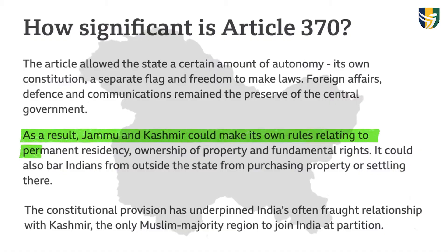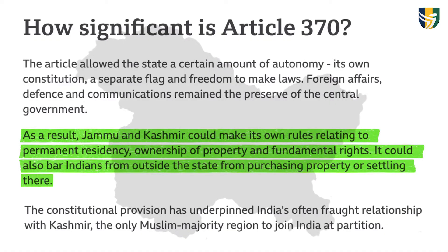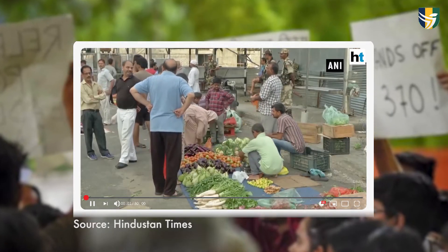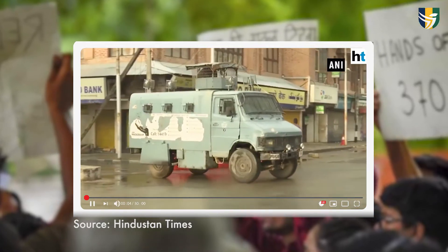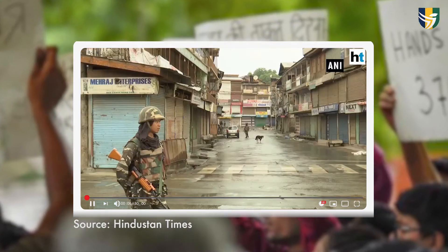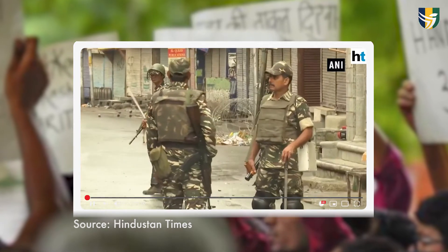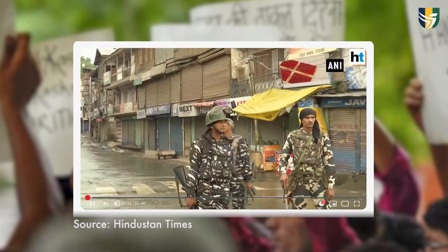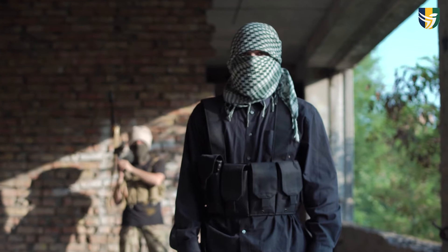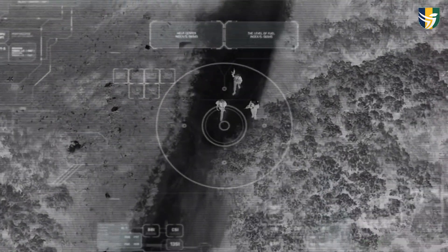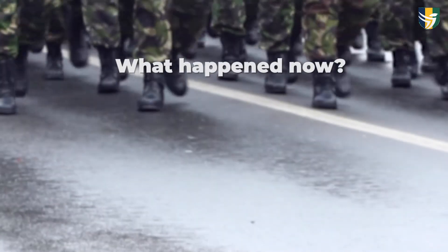The special status could also bar Indians from outside the state from buying property or settling there. Some of the Kashmiri folks were not happy to live on the Indian-administered side. For 30 years, the Indian part of Kashmir has witnessed continuous violence due to separatist and Pakistan-sponsored terrorism, along with military intervention.